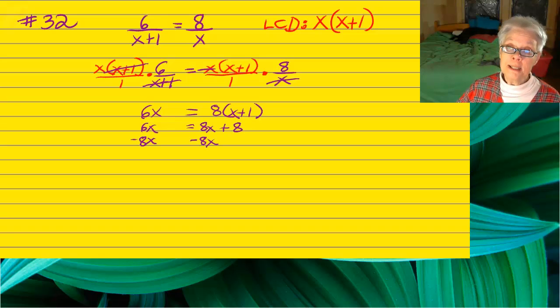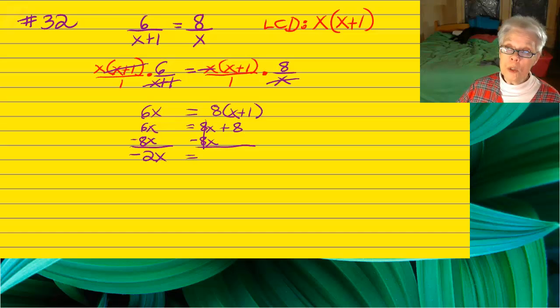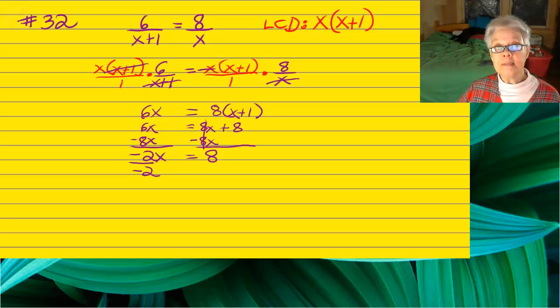Subtract 8x from both sides in order to get your x terms together, because we're solving an equation, so negative 2x will equal 8. Divide by negative 2, and you'll have x equals negative 4.